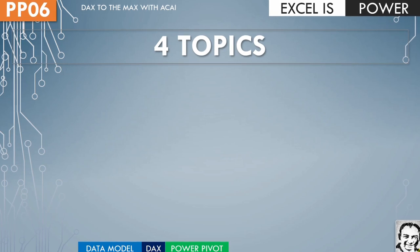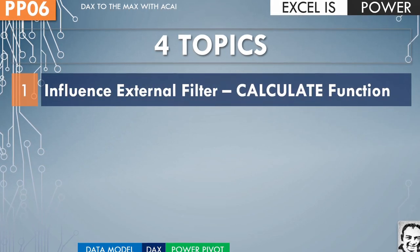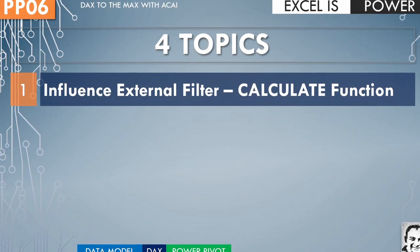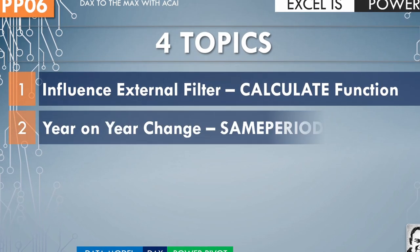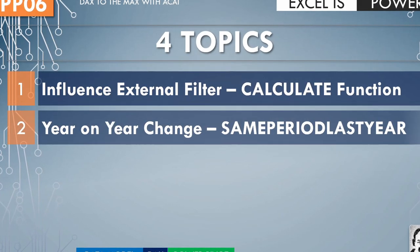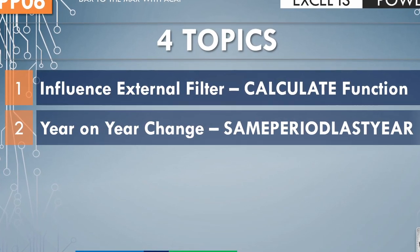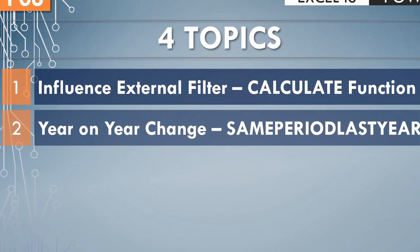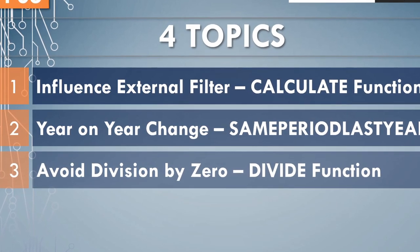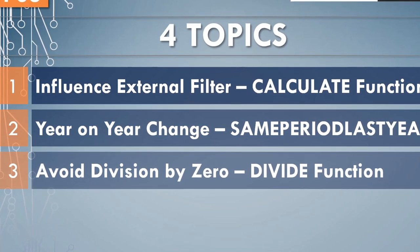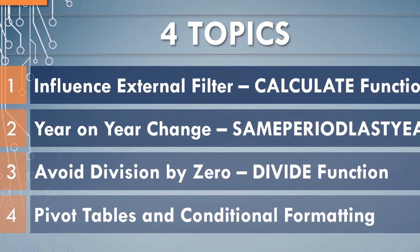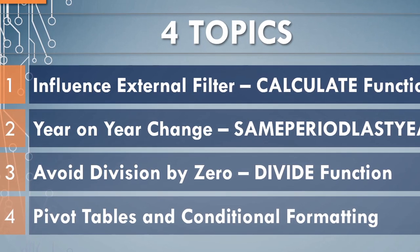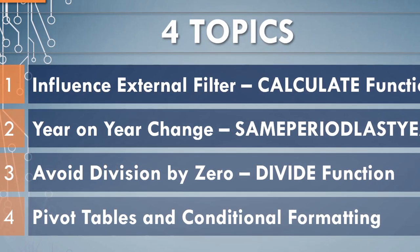we discussed four topics: first, how we can influence external filters using the CALCULATE function; then how we can calculate year-on-year change using the SAMEPERIODLASTYEAR function; how we can avoid division by zero using the DIVIDE function; and finally, we used conditional formatting to highlight some insights inside the pivot table itself.